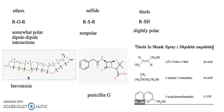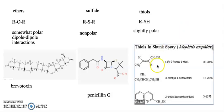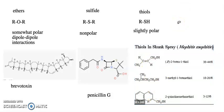Thiols are compounds you don't want to work with unless you really know what you're doing. For example, on my first day in graduate school at Brown, I was working with thiols that had been shipped improperly — they leaked into the packaging and I threw the packaging in the trash. Basically, my first day of graduate school I cleared out the entire chemistry building at Brown University. As shown here, skunk spray is composed of a mixture of basically three different thiols. Lesson: thiols smell really bad.